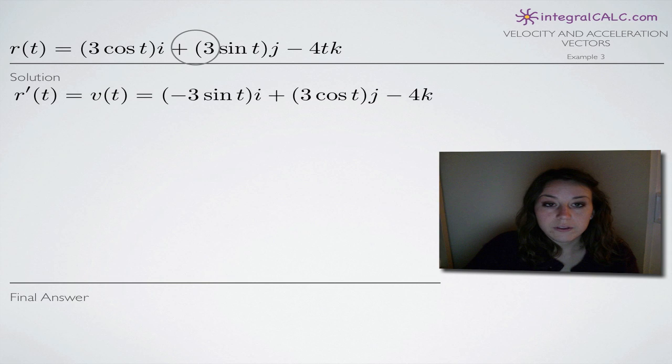For the term that includes j here, the derivative of sine is cosine. So we end up with 3 cos t and we just leave that j alone. And then the derivative of 4t. Again, ignore the k completely. Just look at the 4t and of course the derivative of 4t is simply 4. So we end up with minus 4k.